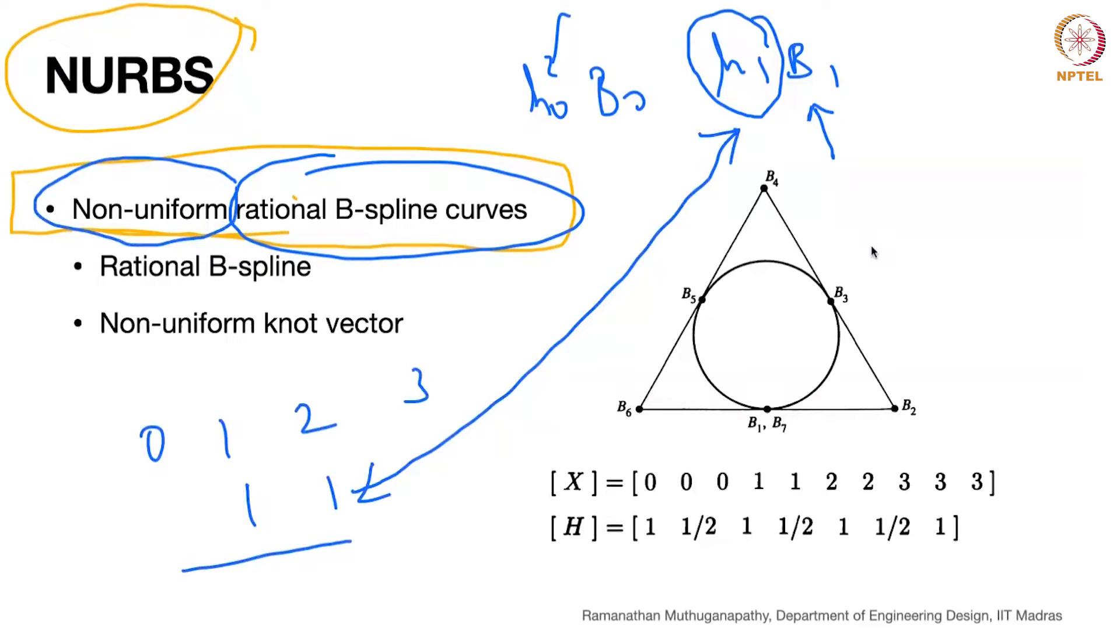Repeating knot value, which is called non-uniform knot value, and then putting a weight onto the control point makes it rational. Putting together it becomes what is called a non-uniform rational B-spline. This is the top of it, top echelon. If you can understand non-uniform rational B-splines, I think you are done pretty much. This combines the idea of rational B-spline and the non-uniform knot vector.